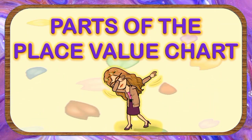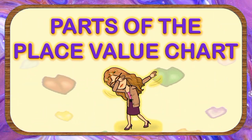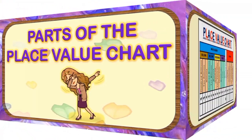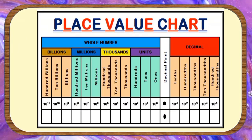Parts of the Place Value Chart. The first part of the place value chart that we will talk about is Periods. Periods are groups of three place value names of whole numbers, namely Units, Thousands, Millions, Billions, and so on.